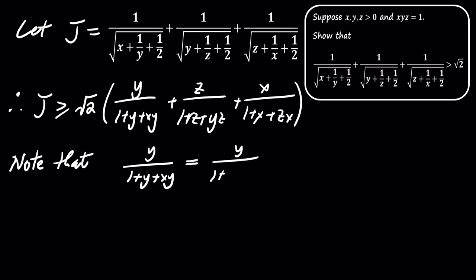Since we know that the product of x, y, and z is equal to 1, we can simplify the expression for j further.